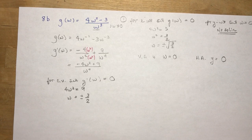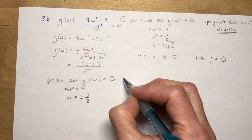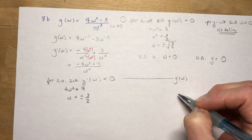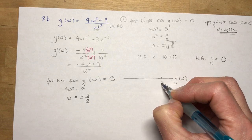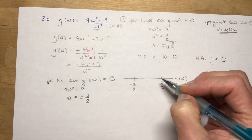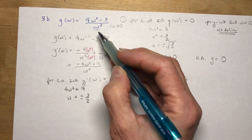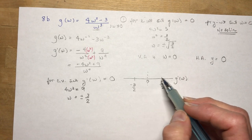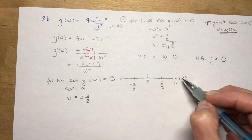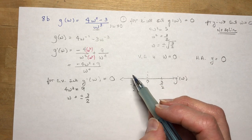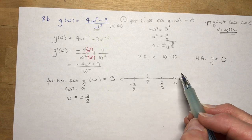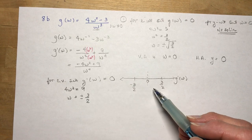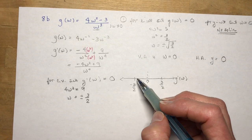For the first derivative test, we make a number line labeled g'(w). We also have to watch out for the other critical value: the vertical asymptote at w = 0. So the intervals are: (−∞, −3/2), (−3/2, 0), (0, 3/2), and (3/2, ∞). For each interval, figure out the sign of −4w² + 9 and w⁴, then multiply their signs together.